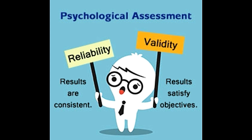All research is conducted via the use of scientific tests and measures, which yield certain observations and data. But for this data to be of any use, the tests must possess certain properties like reliability and validity, that ensure unbiased, accurate, and authentic results.